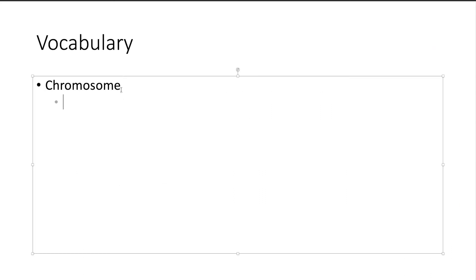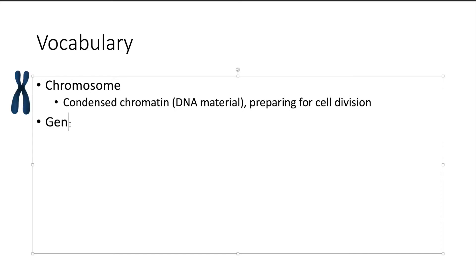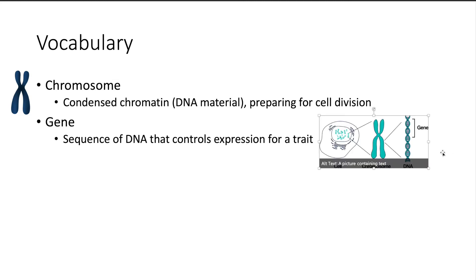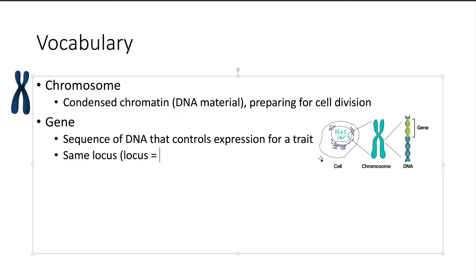Before we move on, we'll cover some basic vocabulary for this chapter. A chromosome is a condensed form of chromatin that can be viewed under a microscope — the heavily folded form of a DNA strand when preparing for cell division. A gene is a sequence of DNA that controls a certain trait, usually found on the same locus. Locus means the location on a chromosome of a specific number. In humans, we have 23 pairs of chromosomes, each carrying certain genes that control certain traits.